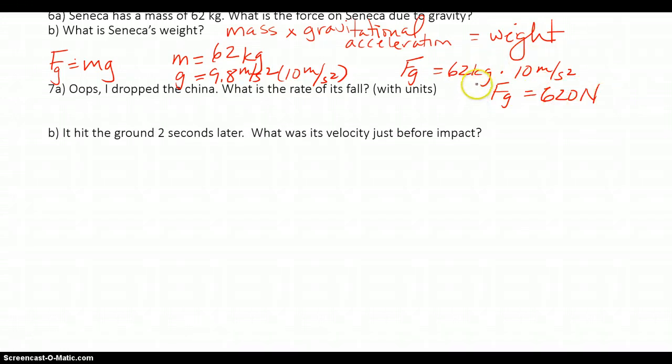That is the weight of Seneca. So the next and last one is where you have dropped a piece of China. What is the rate of its fall? So first of all you know that anything that falls is always traveling at 9.8 meters per second squared. That every second it's falling it's going to travel 9.8 meters per second faster. Okay? So every second that it falls it will be traveling 9.8 meters faster.